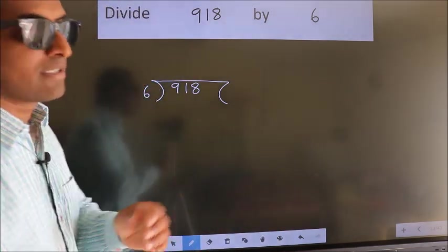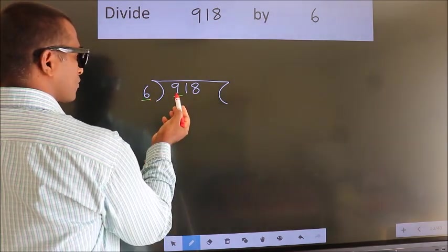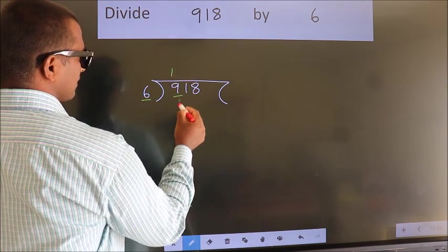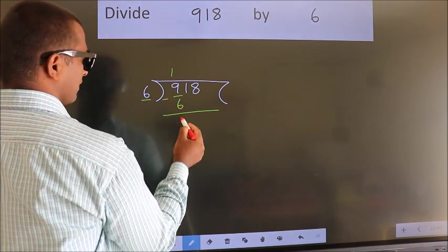Next. Here we have 9, here 6. A number close to 9 in 6 table is 6 1s 6. Now we should subtract. We get 3.